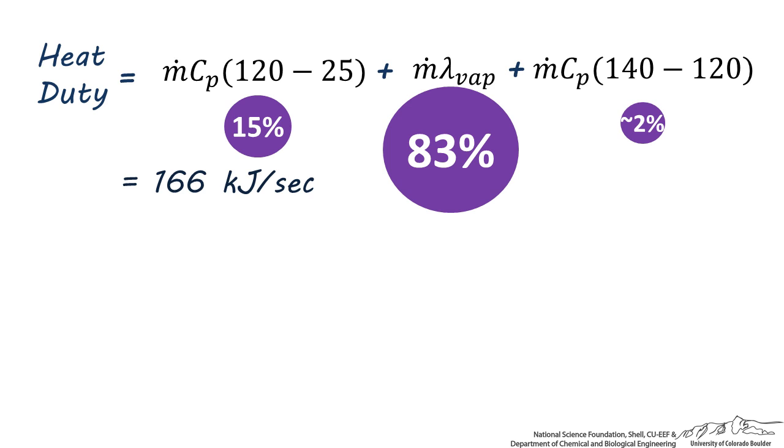So the take-home message here is that whenever a phase change occurs, there's a substantial amount of heat required or released. So if you see a heat duty that appears to be quite large, it's most likely because a phase change is occurring.